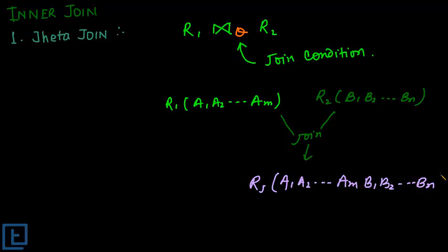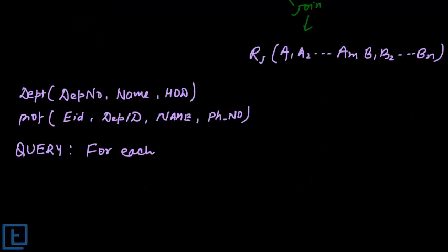Let's take a concrete example of theta join. We have two relations: 'Department' with attributes department_number, name, and hod (where hod holds the employee ID of the head of department), and 'Professor' with attributes employee_id, department_id, name, and phone number. The query is: for each department, find the department name and the name and phone number of the professor who is the hod.